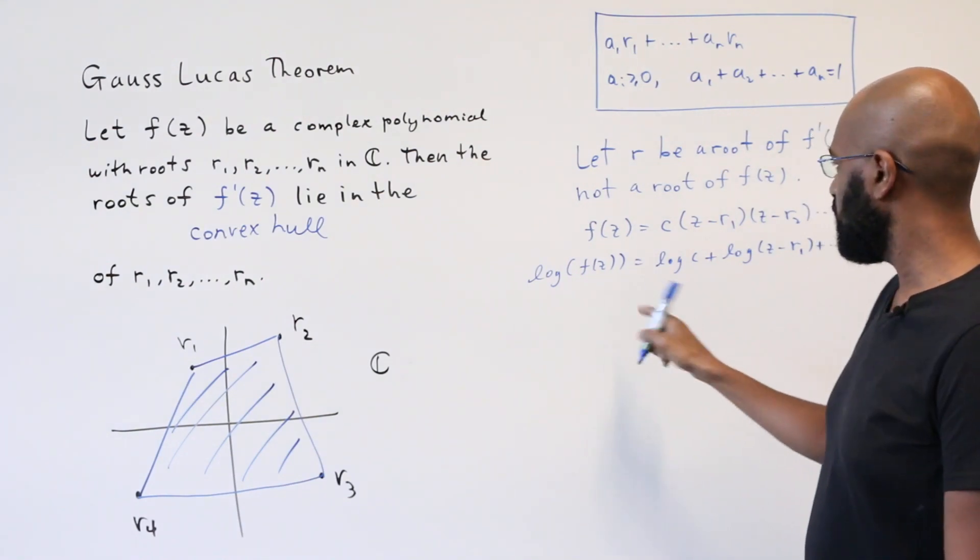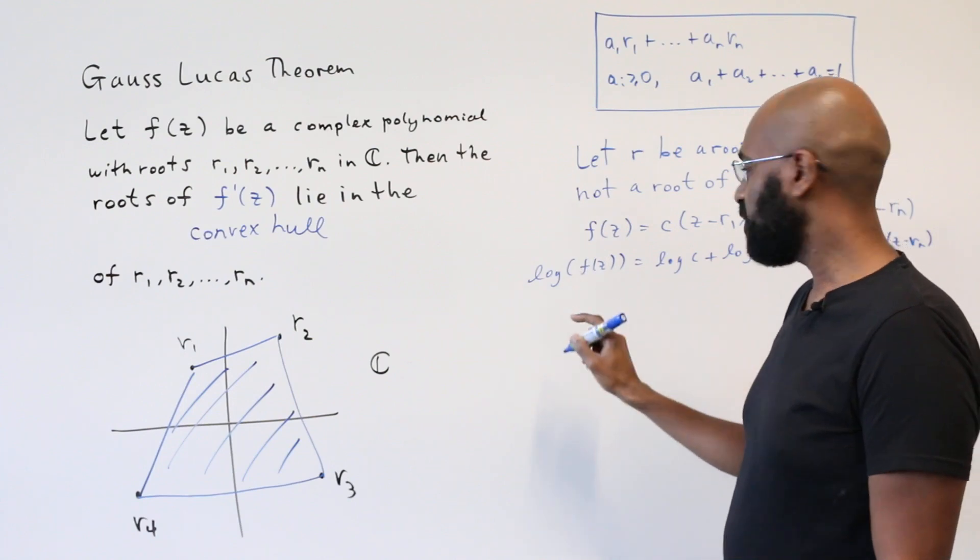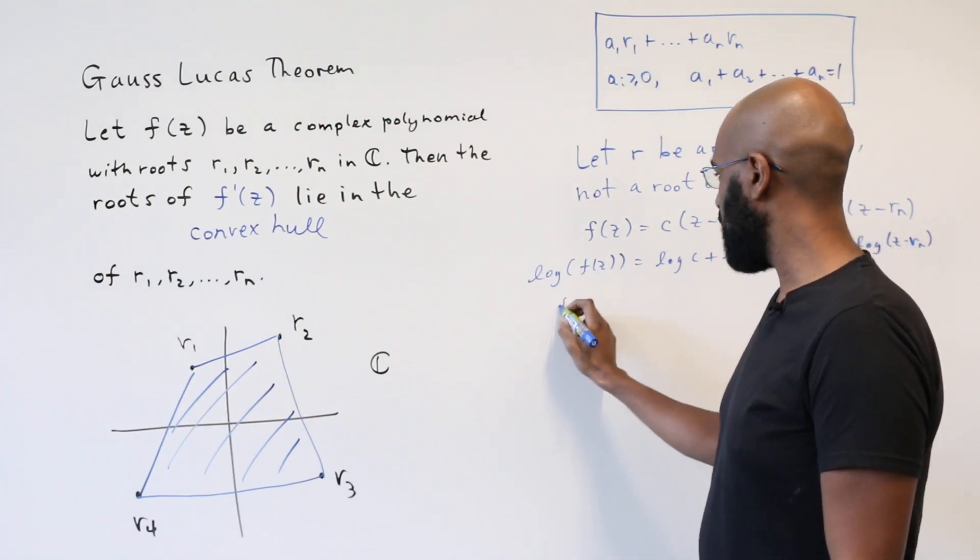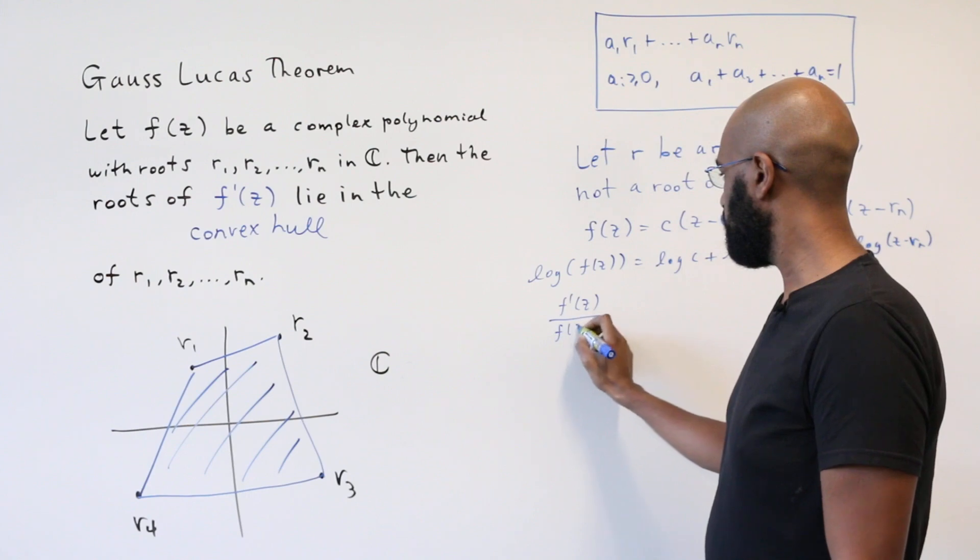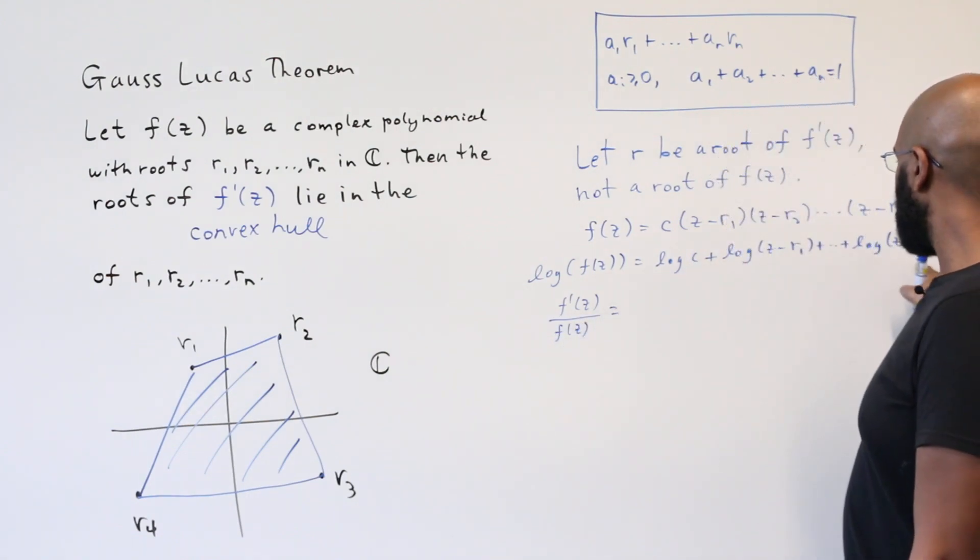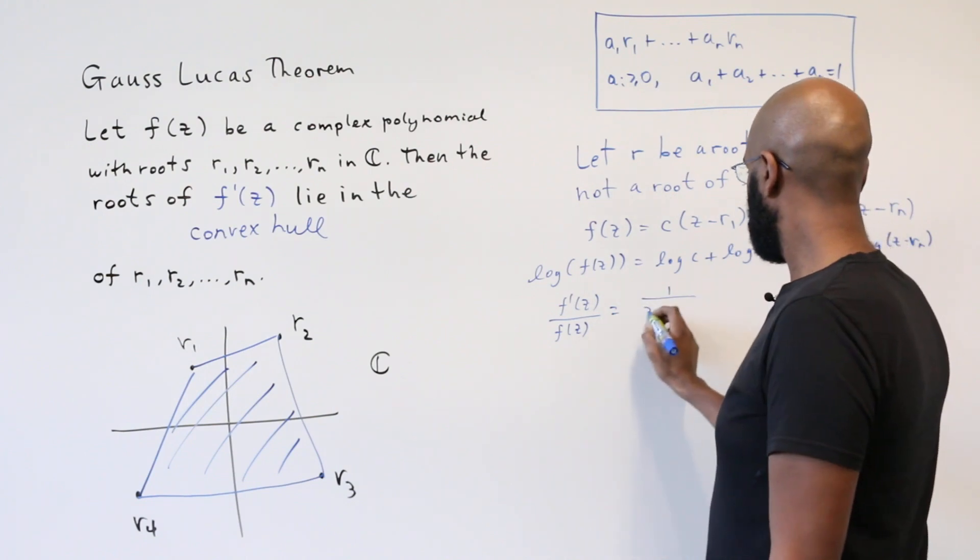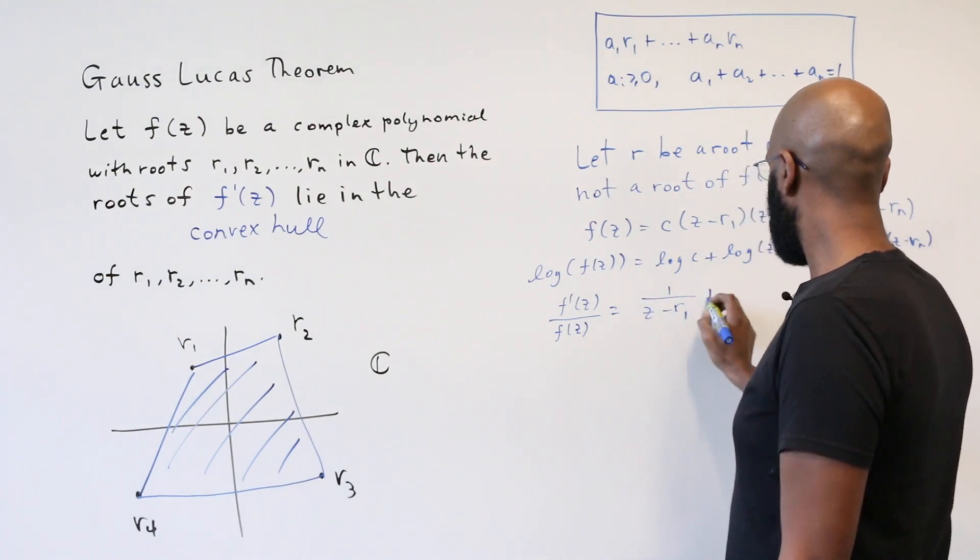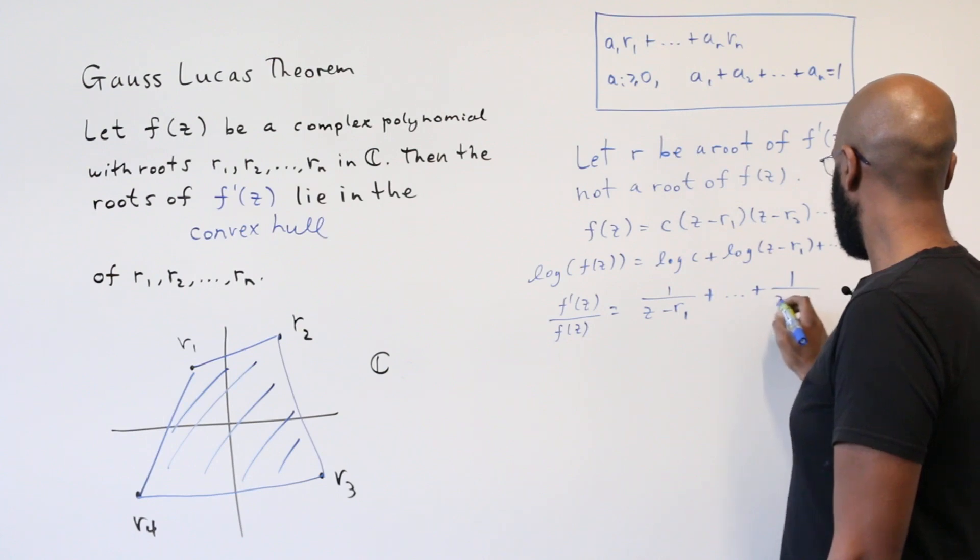And now differentiating this, here we'll get 1 over f(z) times f prime of z. So we'll have f prime of z over f(z). This constant will disappear, and then here we'll have 1 over z minus ri. For each i, I'll add it up.